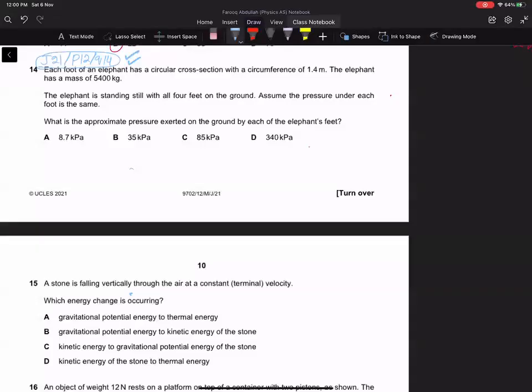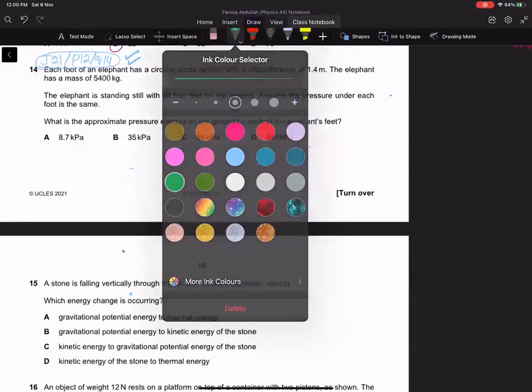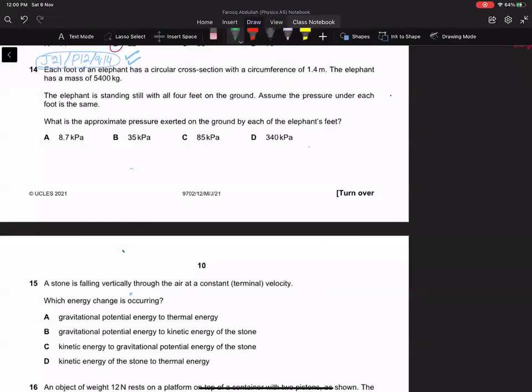It is June 21 paper one question 14. This question seems to be quite simple. Each foot of an elephant has a circular cross section with a circumference of 1.4 meters. The elephant has a mass of 5500 kg. The elephant is standing still with all four feet on the ground, assuming the pressure under each foot is the same.